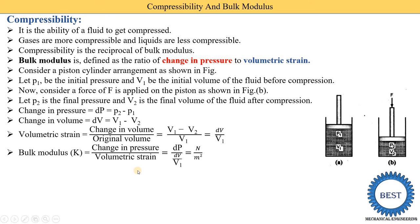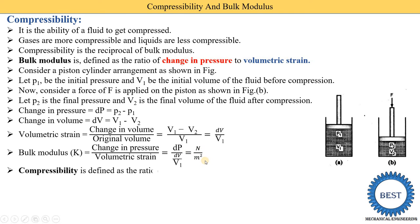The unit of bulk modulus: pressure has units of newton per meter squared, and volumetric strain is unitless because change in volume in cubic meters divided by original volume in cubic meters cancels out. Therefore, the unit of bulk modulus equals the unit of pressure, which is newton per meter squared.